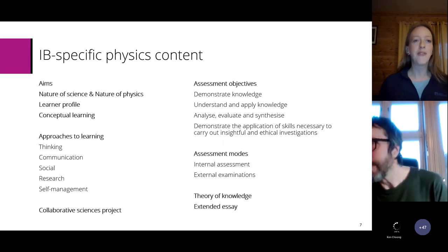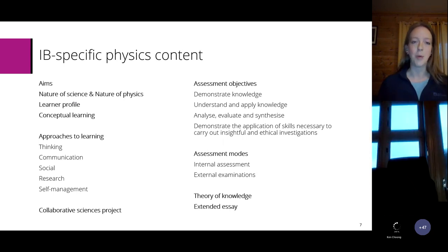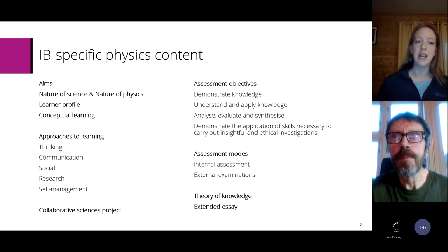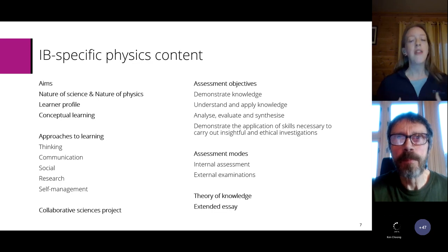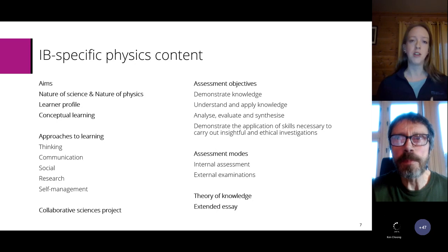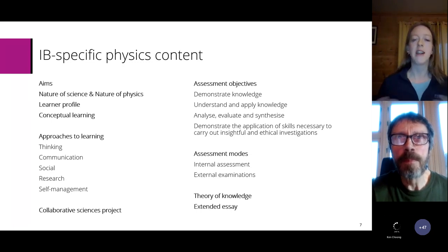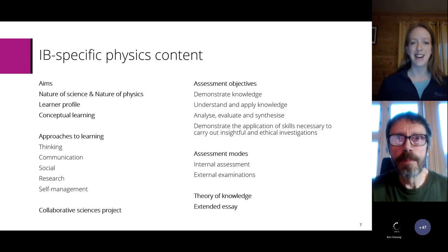Also in the guide, as well as physics content, we'll find the things that relate specifically to the IB — what makes it an IB diploma physics course. In the guide you'll find aims, content about the nature of science and the nature of physics, the learner profile, and this big idea of conceptual learning. We also have approaches to learning and how the guide believes students will develop these approaches while studying physics. The group four project has been renamed as the collaborative sciences project.